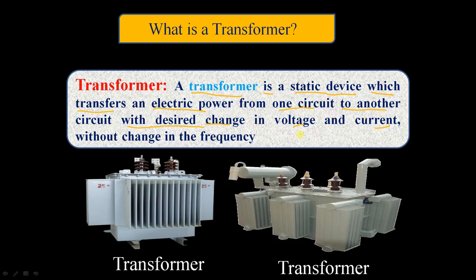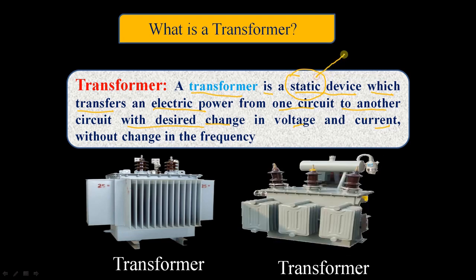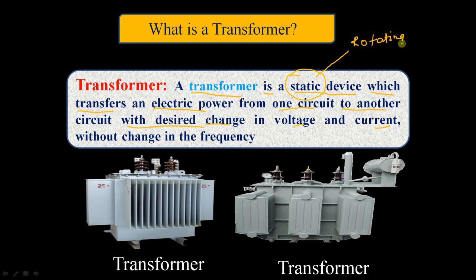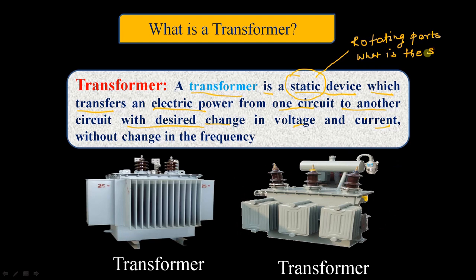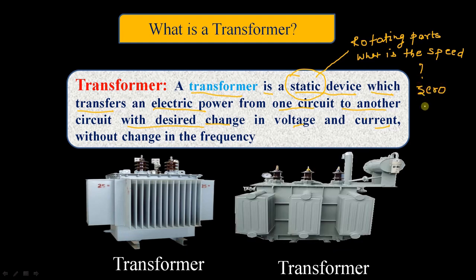In the definition we observe the word 'static.' What is meant by static? A transformer is a static device means there are no rotating parts present in the transformer. So what is the speed of a transformer? The speed of a transformer is zero, because the transformer is a static device.